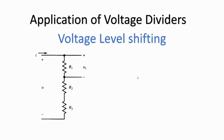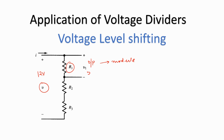A simple application of voltage dividers is voltage level shifting. For example, if I have an adapter which can give me 12 volts but I need to power a module which requires only 5 volts, I can use a voltage divider circuit to take 12 volts as input and tap out only 5 volts across the appropriate resistor.